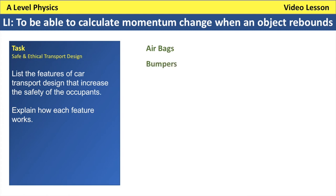Bumpers give way a little on impact, increasing the impact time and therefore reducing the impact force. If the initial speed is too high, the bumper and vehicle chassis may be damaged. Crumple zones work the same way — the engine compartment is designed to collapse in a front-end impact. If it were rigid, the impact time would be very short and the force very large. By crumpling, the impact time increases and the force is reduced.